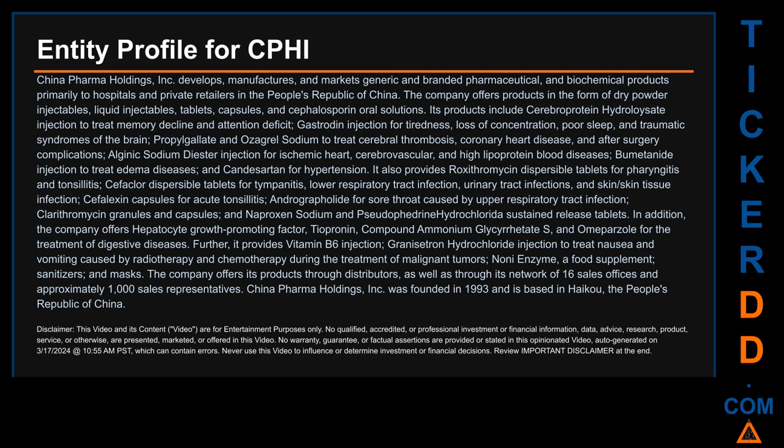The company offers products in the form of dry powder injectables, liquid injectables, tablets, capsules, and cephalosporin oral solutions. Its products include Cerebroprotein Hydrolysate injection to treat memory decline and attention deficit; Gastroden injection for tiredness, loss of concentration, poor sleep, and traumatic syndromes of the brain; Propylgallate and Ozagral Sodium to treat cerebral thrombosis, coronary heart disease, and post-surgery complications; and Alginic Sodium Diester injection for ischemic heart, cerebrovascular, and high lipoprotein blood diseases; and Bumetanide injection to treat edema diseases, and Candesartan for hypertension.